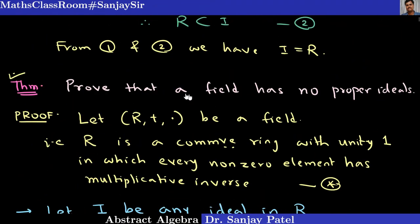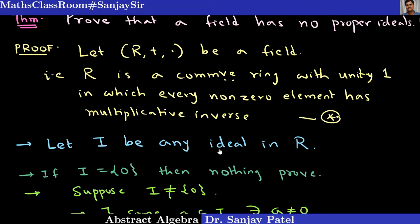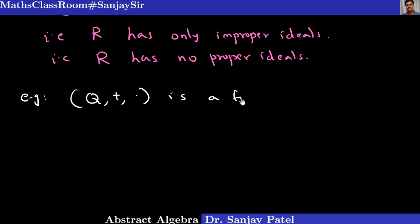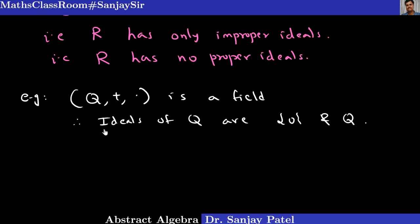Remember this very important result: a field has no proper ideals. If you take any ideal in the field, it is either singleton {0} or the whole ring R. For example, Q plus dot — the set of rational numbers — is a field with respect to addition and multiplication. So the only ideals of Q are singleton {0} and Q itself, by this result.